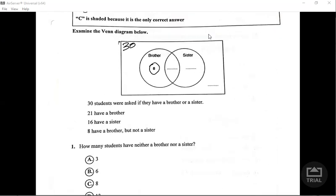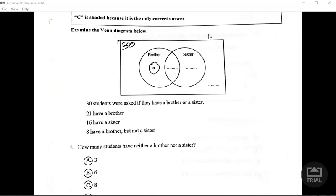8 from 21 which gives us 13. So for the intersection you have 13 here. It says they have 16 sisters, so this already have 13, so we need an additional 3 to make 16.